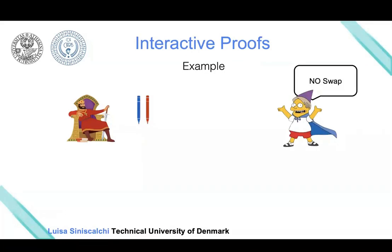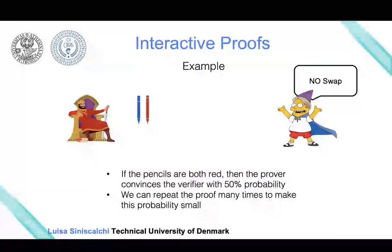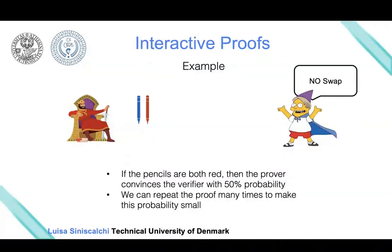He will be right with probability one-half. But what we can actually do is repeat this proof many times. Each time, the prover and verifier will agree on two pencils and their positions, then the verifier swaps or doesn't swap them, and each time the prover has to say whether the pencils were swapped.